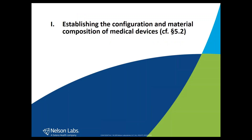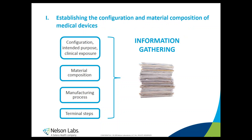In the first step, you will have to establish the configuration and material composition of your medical device, as described in paragraph 5.2 of the final draft. You will need to understand your medical device: its configuration, how it will be used, the intended purpose, and the clinical exposure — in other words, how many replicates of your medical device can be administered to the patient in one day. You will also have to describe the material composition and understand the impact of your manufacturing process, including which residues could remain after processing.